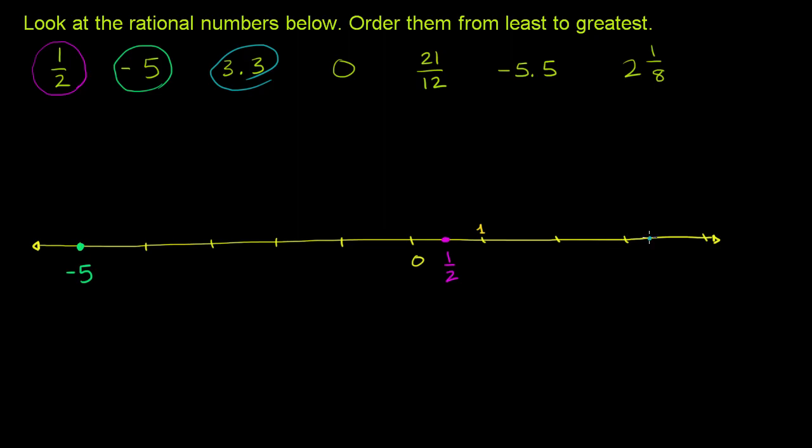This is 3. This right over here would be 3.3. Let me label. What I'm going to do is I'm going to label the numbers on the number line up here. So it's 1, 2, 3, 4. This is 0, negative 1, negative 2, negative 3, negative 4, negative 5, and so on and so forth.